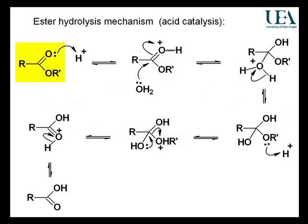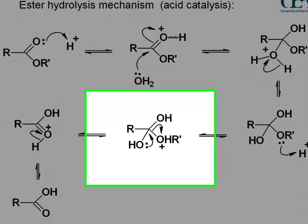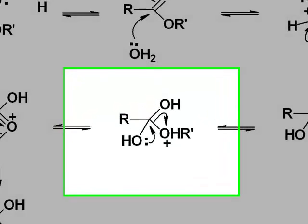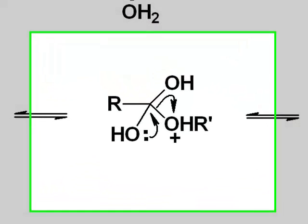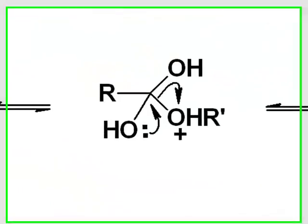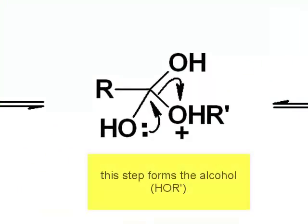Top left on this slide we have the ester starting material. Down the bottom on the left-hand side you can see the carboxylic acid. Alcohol is becoming detached from that ester during the hydrolysis process. Your eye should be drawn into the middle of the slide for the step where that alcohol is coming out.